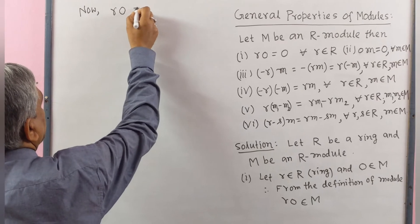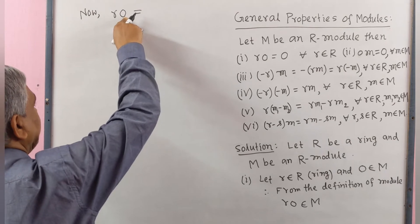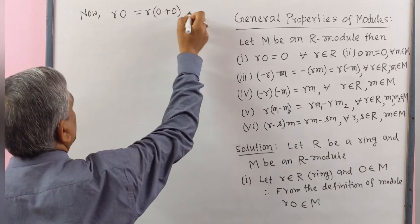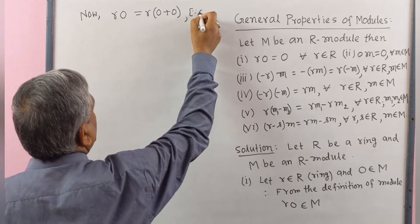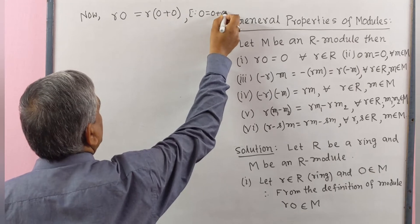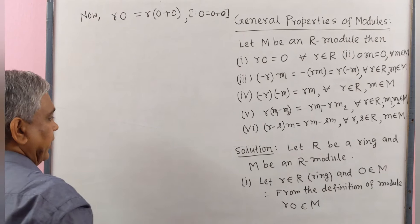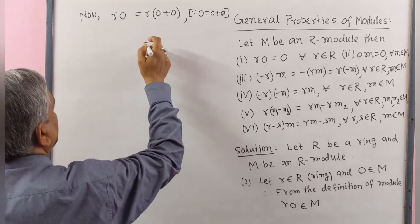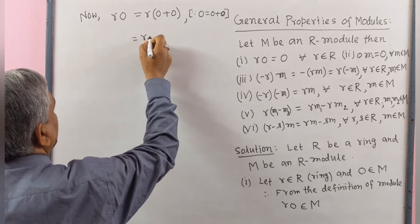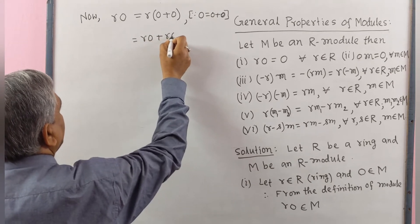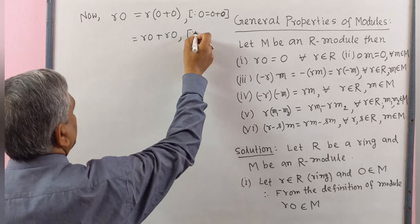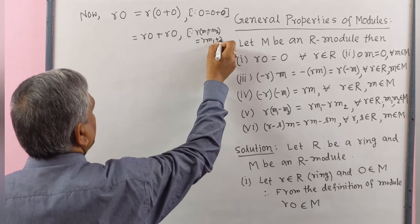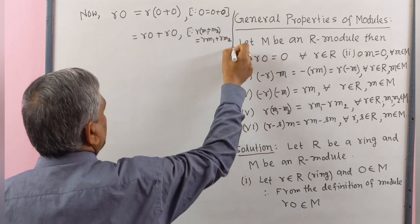Consider r·0, where r is an element of the ring and 0 is the zero element of module M. We write r·0 = r·(0 + 0), since 0 = 0 + 0 in the module. Since M is a group, this equals r·0 + r·0, using the module distributive property r·(m1 + m2) = r·m1 + r·m2.